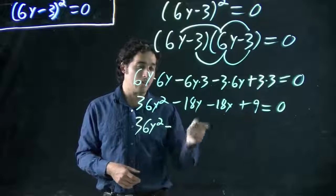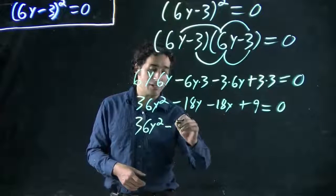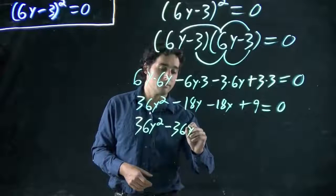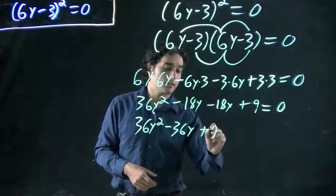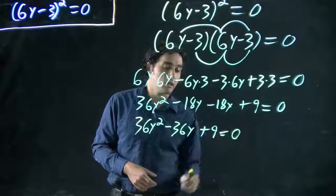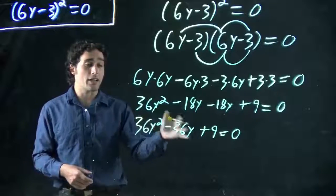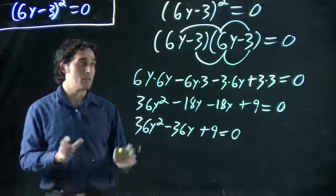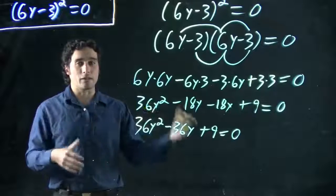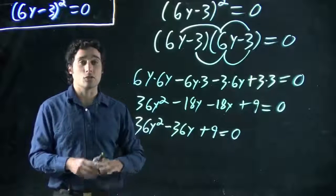So 36y squared stays the same. And then we get, actually, 18 and 18 makes 36 again. All plus 9 equal to zero. And this is what is known as a quadratic equation. We're going to look later at solving this for Y. But for this one, we're just looking at expanding out that term and getting to this line. So we're all done.